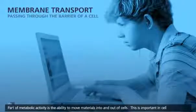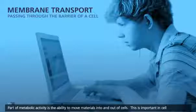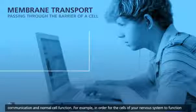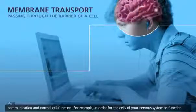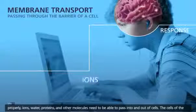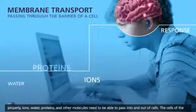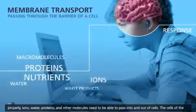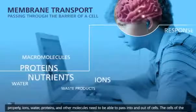Part of metabolic activity is the ability to move materials into and out of cells. This is important in cell communication and normal cell function. For example, in order for the cells of your nervous system to function properly, ions, water, proteins, and other molecules need to be able to pass into and out of cells.